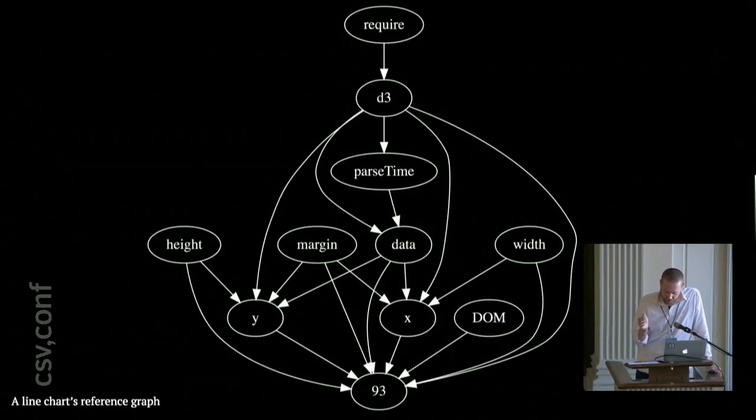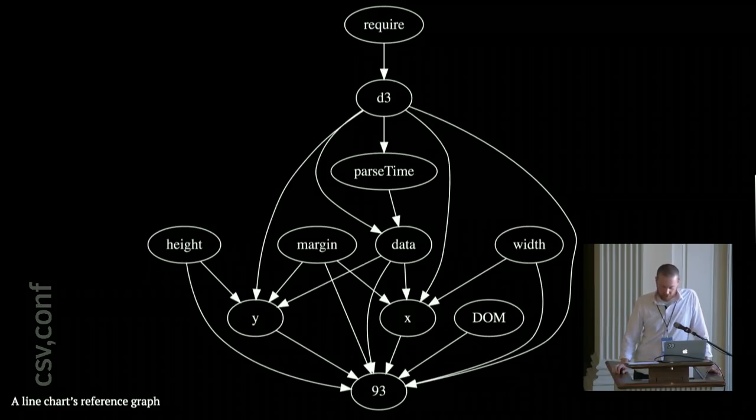Okay. So, now we have a basic little line chart here with a few different cells. Okay. But even though this is a basic line chart, the program's topology is starting to become more complex. So, this is a directed acyclic graph of references within this notebook. So, this is showing you the structure of the program. And this visualization was itself made in D3 express using graphis. There's a command you can run to produce this thing. So, you've got the require at the top. That's how you load the libraries. It generates D3. And then, we use D3 to make our time parsing function. We also use that to parse the data and load the data. We've got your width, height, and margins. Those feed into the X and Y scales. And then, basically, everything feeds into the SVG node, which doesn't have a name. So, it's just number 93 at the bottom.